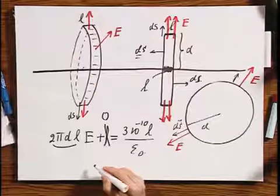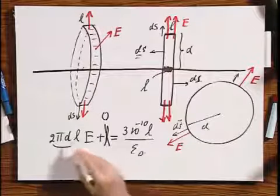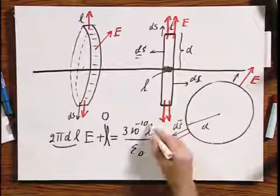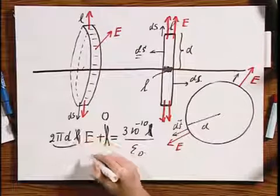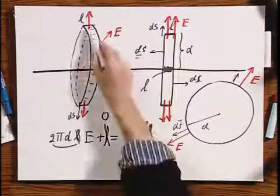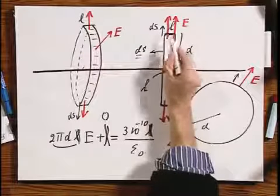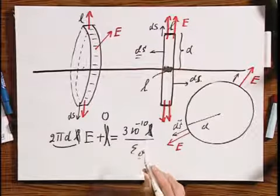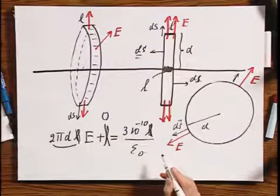And so, you'll find immediately what the E vector is, and what do you see? The L of course cancels because nature couldn't care less how wide you take this cylinder, and if you work this out, you will see that you find exactly the same result as you had before.